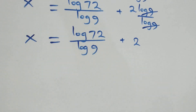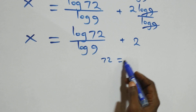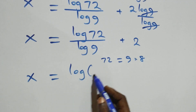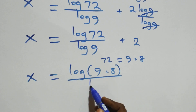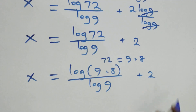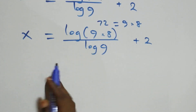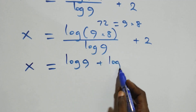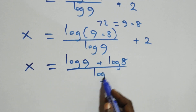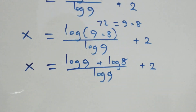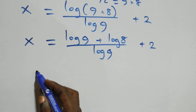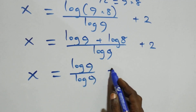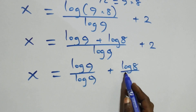We can also express 72 as 9 times 8, which implies x equals log(9 × 8) over log 9 plus 2. Applying the log product rule, we have x equals (log 9 + log 8) over log 9 plus 2.